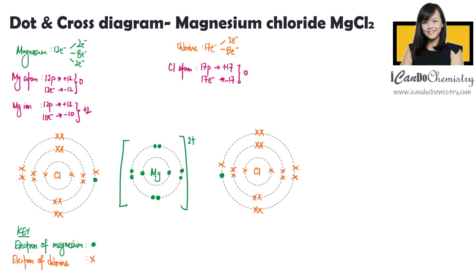When chlorine takes in an electron from magnesium, the number of protons remains unchanged. Hence the positive charge is still +17. However, there are 18 electrons now, so the negative charge is -18. Overall charge of the chloride ion is -1. Now put the bracket and the charge in the dot and cross diagram.